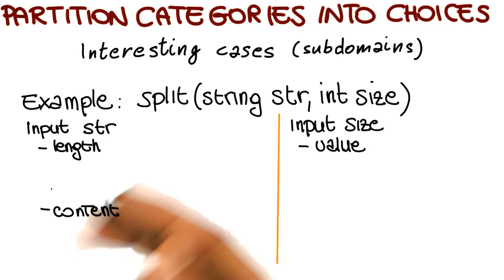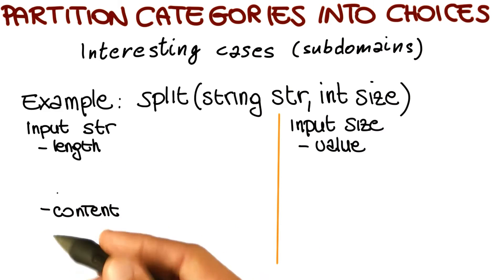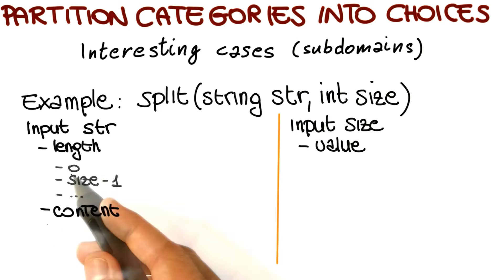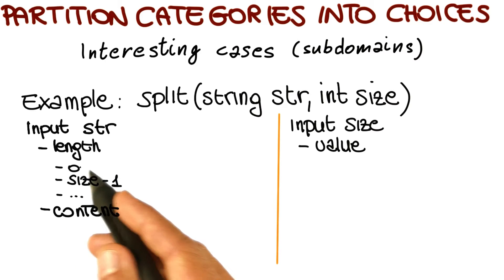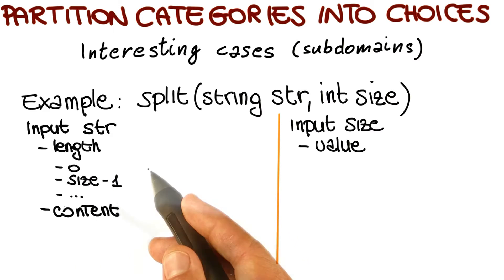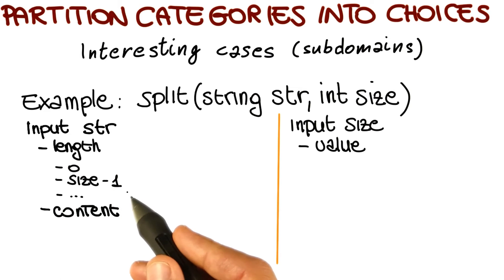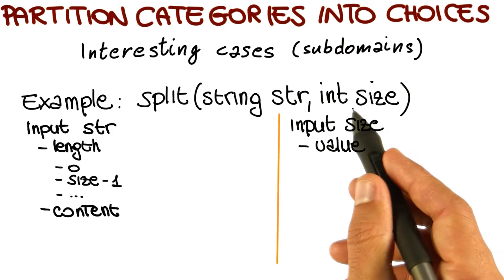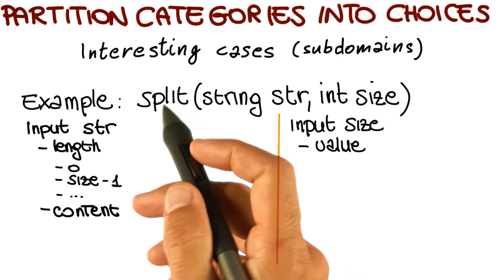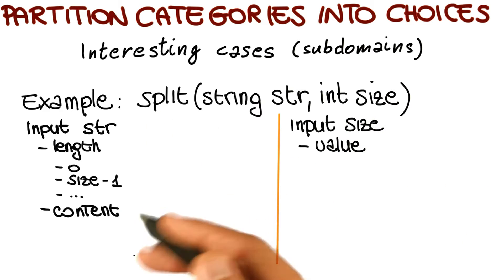Let's start by considering length. What are the interesting cases when we think about the length of the string? Some of those we already saw. One interesting case is a length of size zero, so a string with no characters. Another interesting case is when the length of the string is size minus one, so the string is just one character short of the size at which it will be cut by the split program.